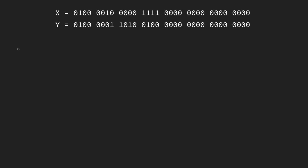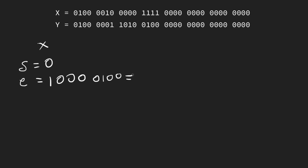So we're going to take x and determine its components. Our sign bit equals zero, so we know it's going to be a positive number. Our exponent field equals 10000100. If we calculate this we find that value equals 132, and then we subtract out 127 to account for our bias — so our actual exponent is going to equal five.